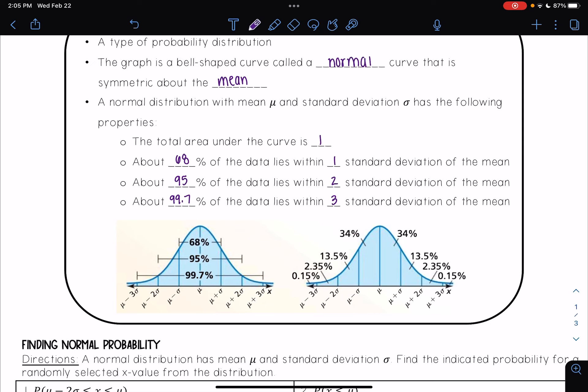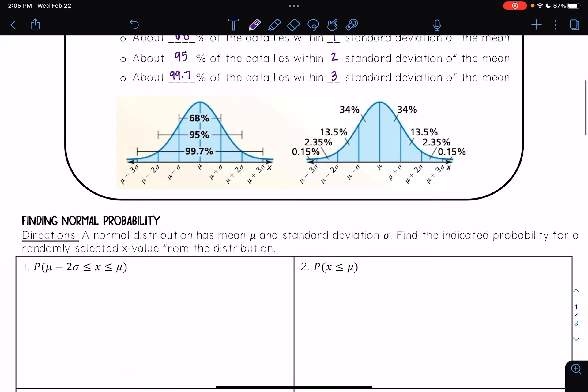And using that and the fact that the curve here is symmetric about the mean μ, we have these different percentages or proportions that show up here. So since this whole thing is 68%, if I divide that by two, that means that both parts are equal to 34% and so on. And so we're going to use that in these problems below.